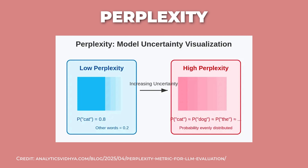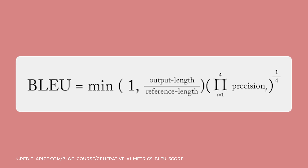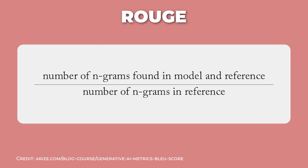Perplexity measures how surprised a model is by text it hasn't seen before. Lower perplexity means the model predicted the text better — it's less confused. Think of it like a reading comprehension test: if you can predict what comes next in a story, you probably understood it well. BLEU and ROUGE are used for tasks like translation and summarization. BLEU compares a model's output to reference correct answers by counting matching words and phrases — if a translation shares lots of words with a professional human translation, it gets a high BLEU score. ROUGE is similar but focuses on recall: how much of the important content did the model capture? It's especially useful for summarization. If a model's summary includes most of the key points from the original text, it gets a high ROUGE score. These metrics aren't perfect — a translation could have all the right words but still sound weird, or a summary could hit all the keywords but miss the main point.